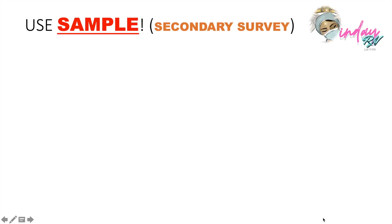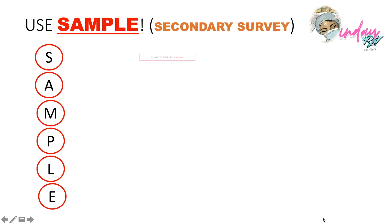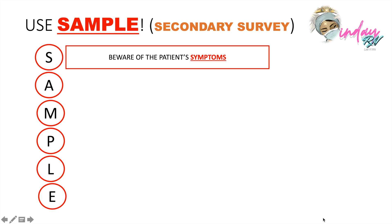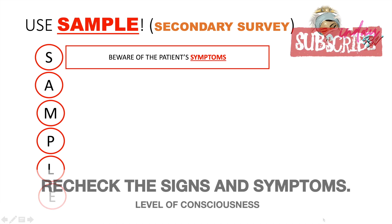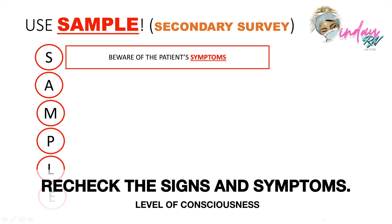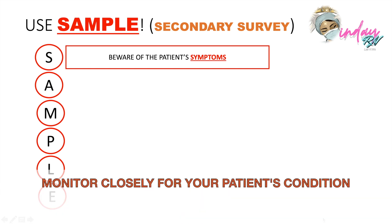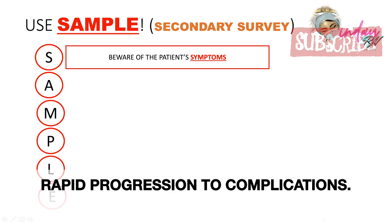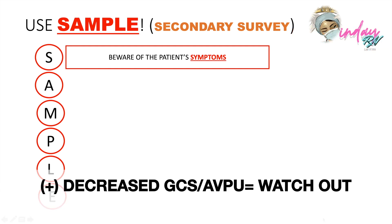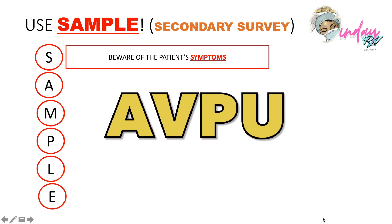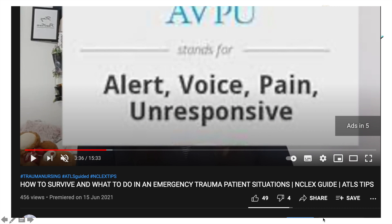You can also use the SAMPLE technique. S — beware of the patient's symptoms; though done with the primary assessment, recheck the level of consciousness at least every 15 minutes per doctor's order. As a nurse, keep a close eye on your patient because there is a possibility of rapid progression into coma. Check the patient's GCS or use AVPU (Alert, Voice, Pain, Unresponsive).